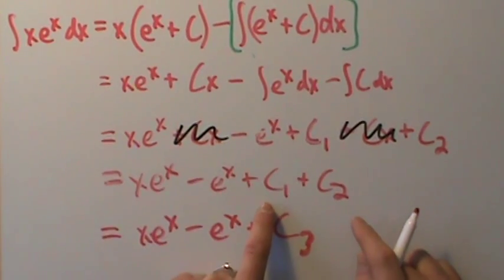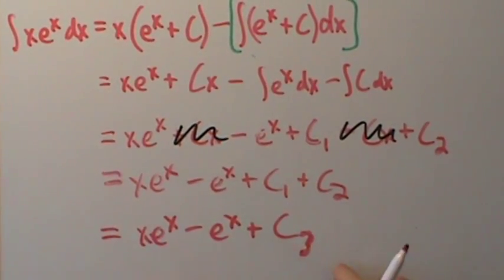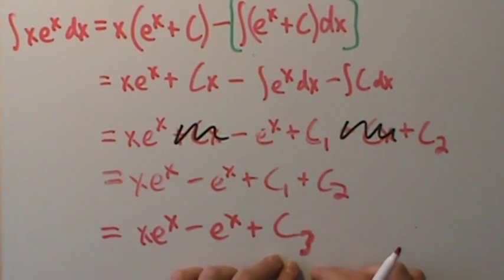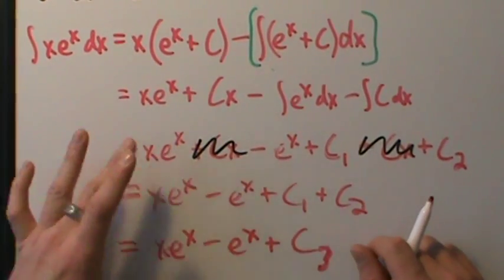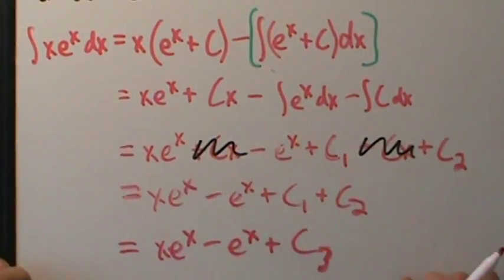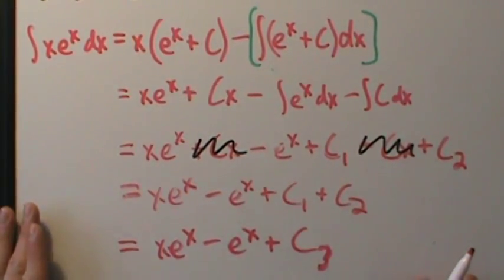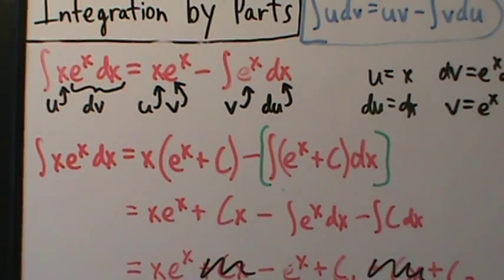So this is the exact same answer we got when we did example one in the last video. Of course it looks different because we have c3 instead of just c, but that doesn't matter at all — it doesn't matter what we call the arbitrary constant in the end. All that matters is the answer is xe to the x minus e to the x plus some arbitrary constant. Now you might be thinking, well, didn't that just work out as a coincidence because we just have x here? But it's actually not true that it's a coincidence — it's going to work out in general. So now we're going to do this exact same thing but with the general formula and not just this specific example.